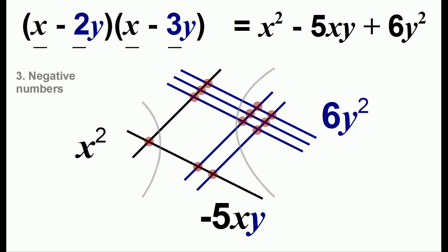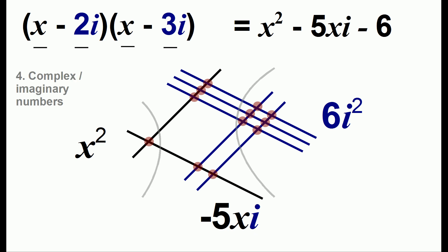We can modify this example to show how we can use the same technique for complex numbers. Let's say that y will be equal to the imaginary number i. Our diagram here is exactly the same except that instead of having a y we've substituted i. So we'll have x squared negative five xi and six i squared. When we write our final answer we just have to remember that i squared is negative one. So we have x squared minus five xi minus six.